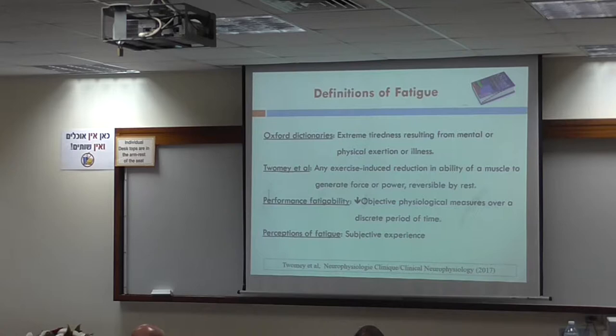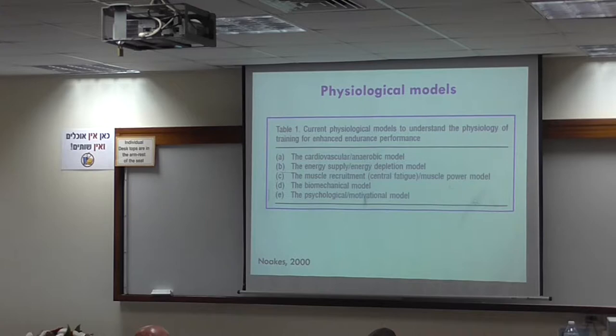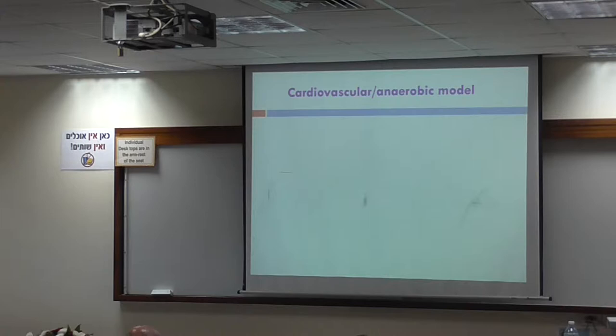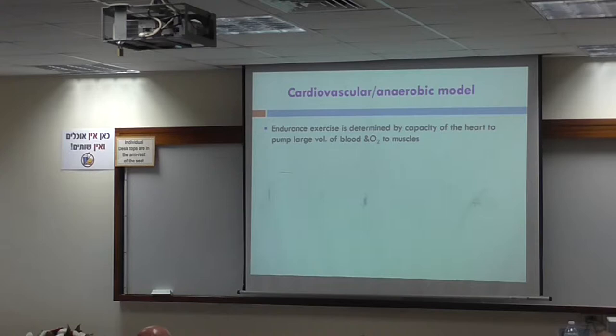We can look at several physiological models of fatigue. The cardiovascular and aerobic model — A.V. Hill started the idea behind lactate uptake and the physiological limitation of muscle. Basically, endurance exercise is determined by the capacity of the heart to pump large volumes of blood and oxygen to the muscle, and the muscle can achieve a higher work rate before developing anaerobiosis as a limiting factor for continuing exercise.